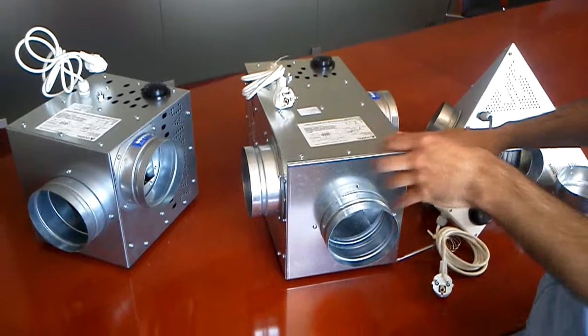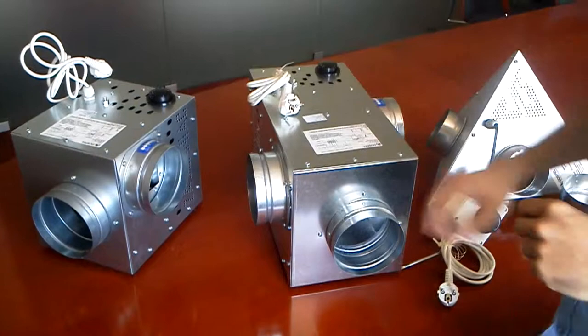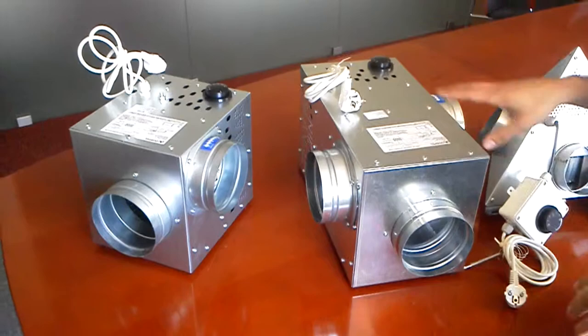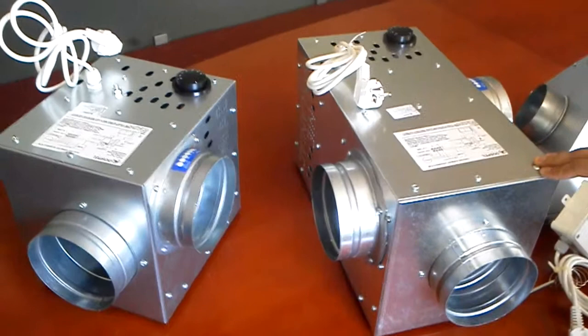So here we have the COM 2 and the COM bypass. Here we have the COM pyramid. Now these fans come in a range of different sizes. So the COM 2 and COM bypass come in three different sizes. We have the 400 to the 800 and these have different ranges of circulation.